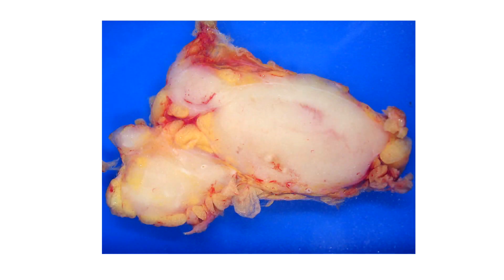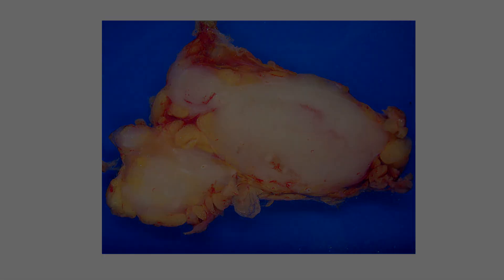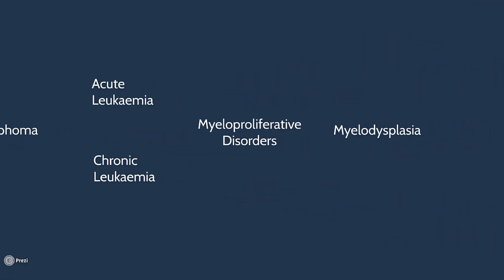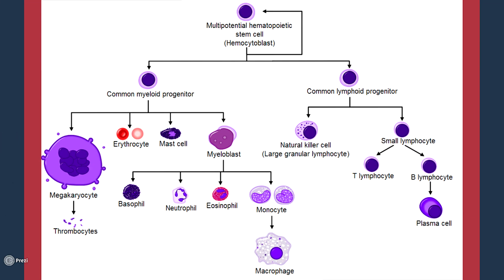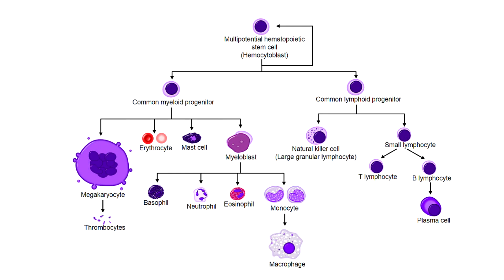It could even be in the skin. For the most part lymphoma is a solid tumour — it's all in one place. Before we talk about the next diseases, we're going to look back at what's happening in bone marrow. We're going to look at haematopoiesis, which is basically the family tree of blood cells.